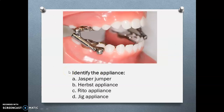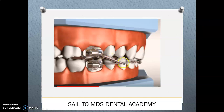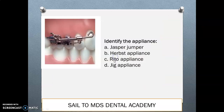Now focusing on fixed functional appliances: this is the classic Herbst appliance; this is the Jasper Jumper; this depicts the RITO appliance; and this one is the JIG appliance. These four fixed functional appliances — Jasper Jumper, Herbst, RITO, JIG — are normally used for correction of Class 2. The advantage over removable appliances is better patient compliance and that they are less bulky.